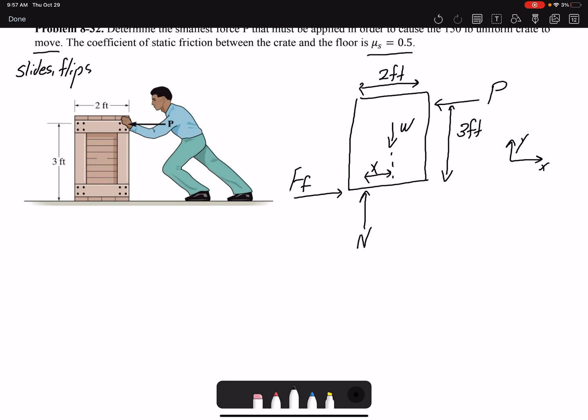Let's look at the sliding case first. So summation of forces in y will give me that N equals W equals 150 pound. For sliding, I have summation of forces in x equal zero.